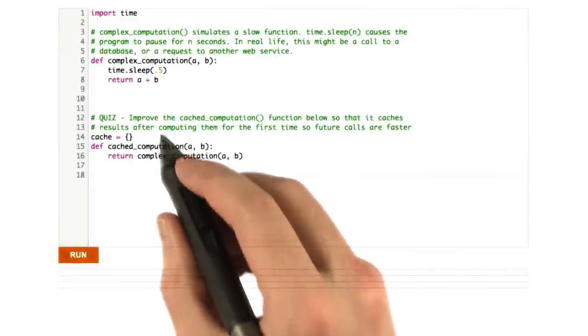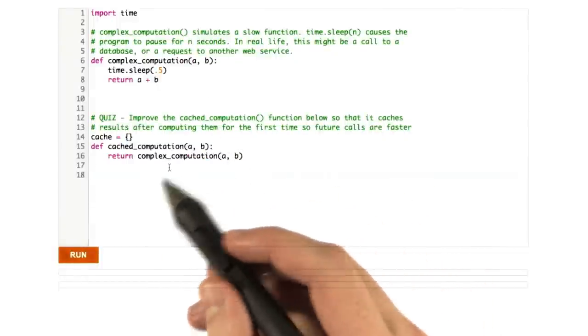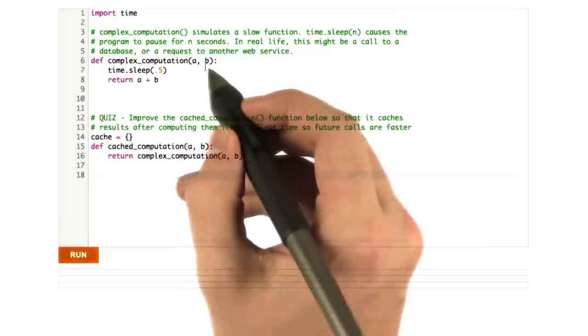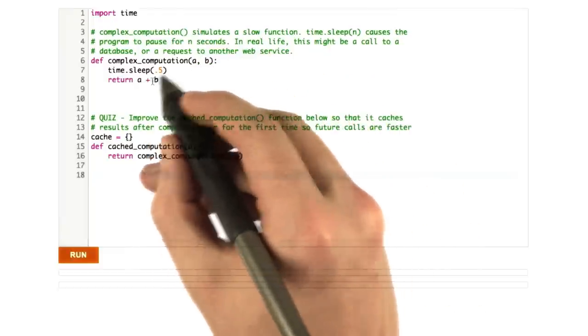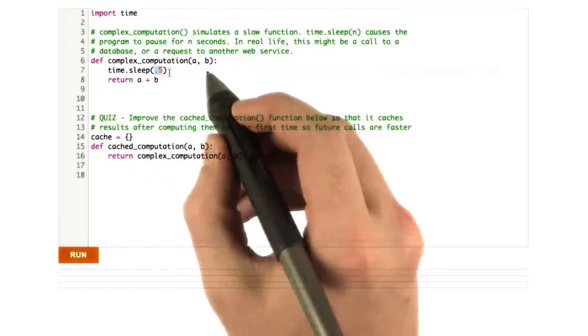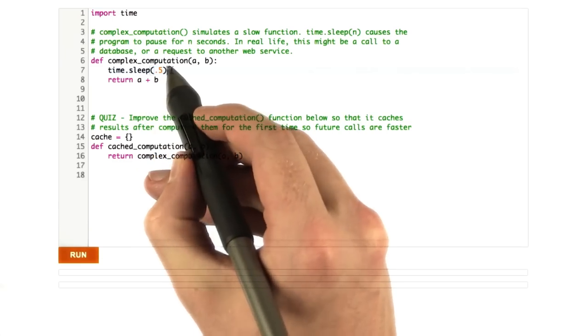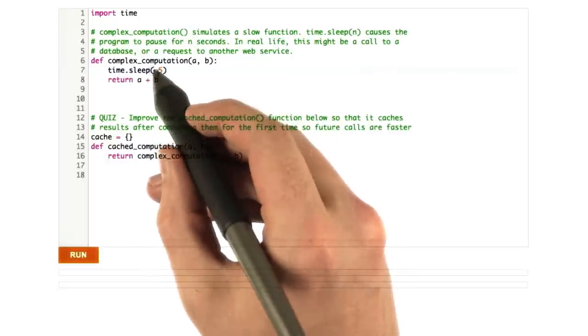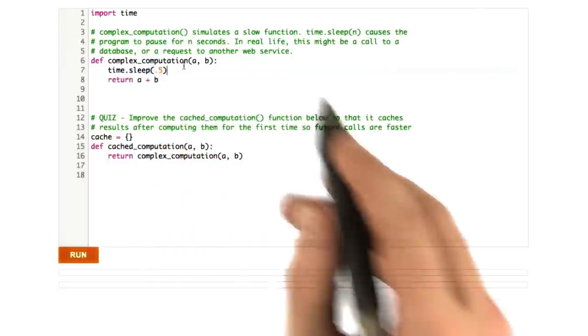What I'd like you to do is implement that caching algorithm here in Python. So, what I've given you is a function called complex_computation. And this takes two numbers and adds them up, but it's going to take half a second to do so. The time.sleep function causes Python to just sleep or wait for however much time you want. In this case, I have it sleep for half a second.